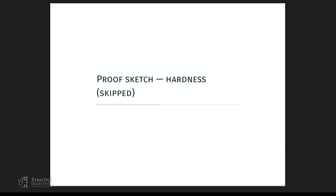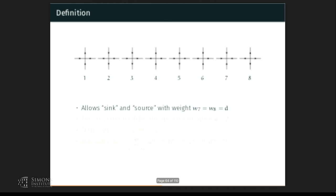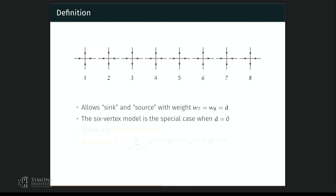Now let's move on to the eight vertex model. This time we have two more local configurations: sinks and sources. We still insist on arrow reversal symmetry and give them the same weight D. The six vertex model is a special case when D = 0. The states this time are not Eulerian orientations anymore — they are even orientations, where every vertex should be in one of the eight local configurations.